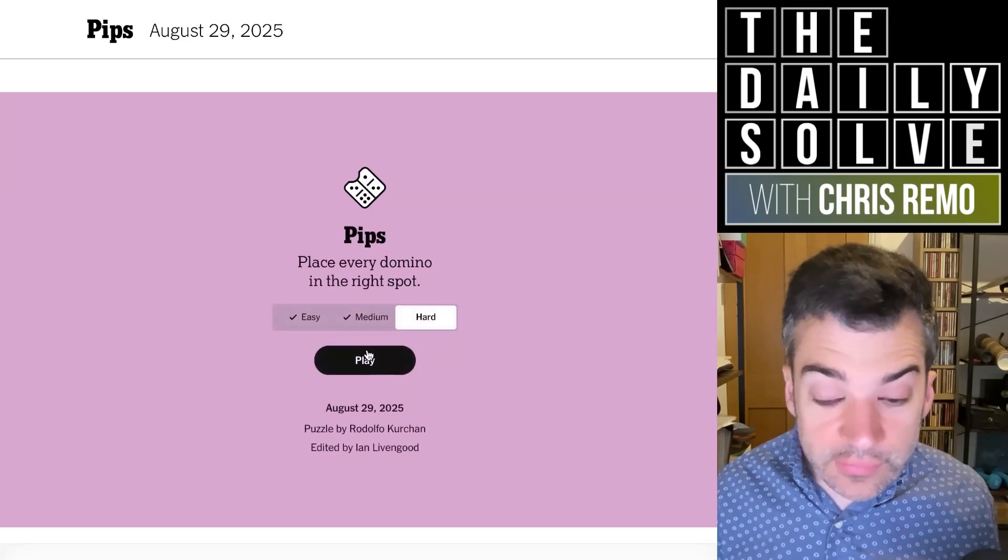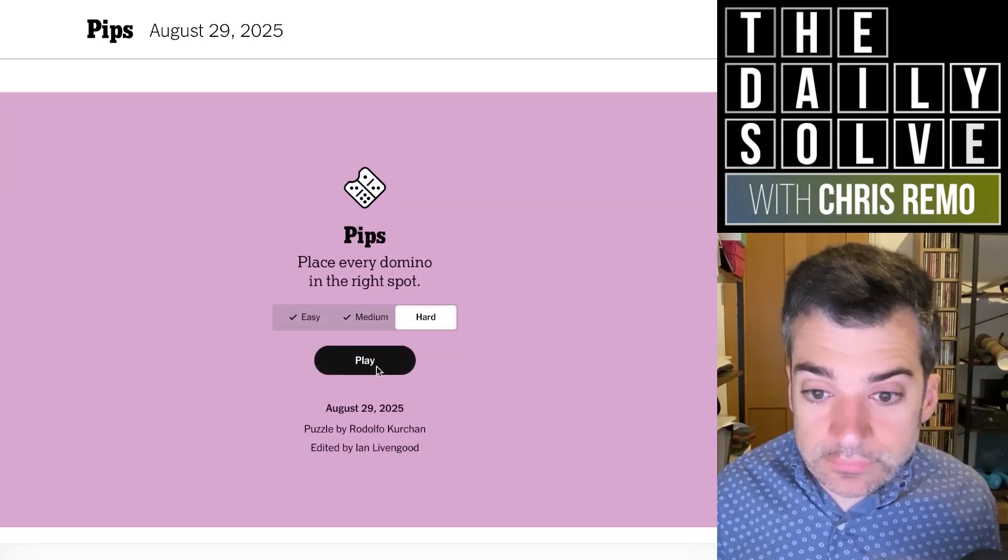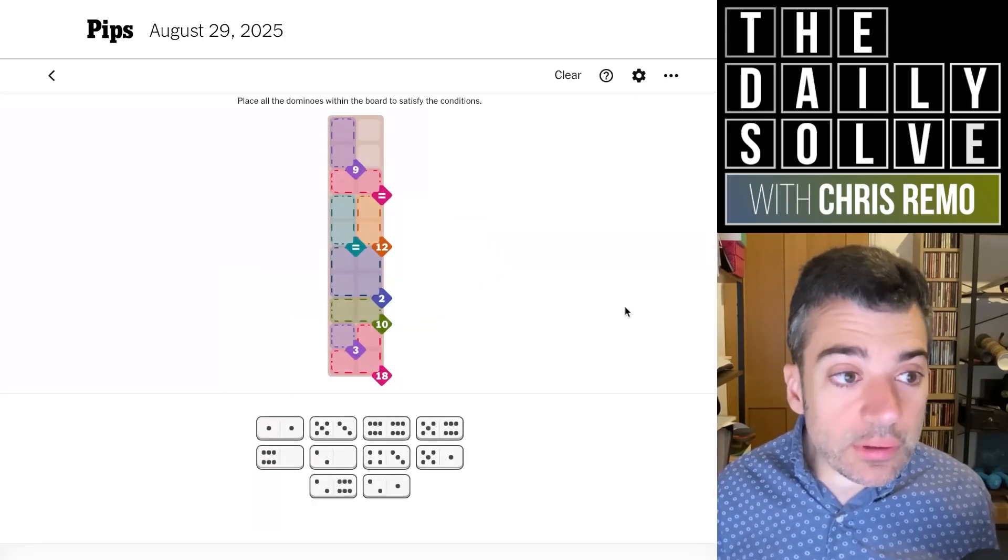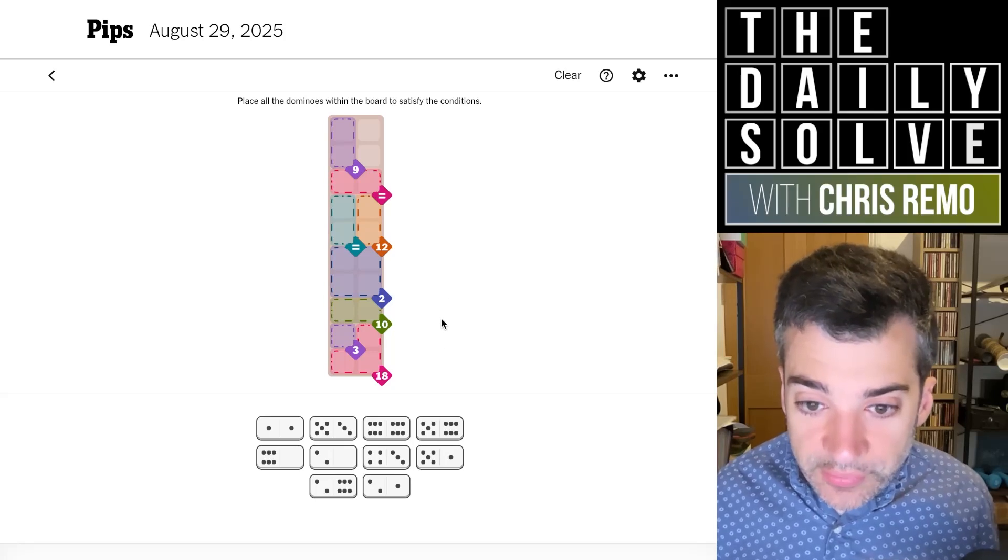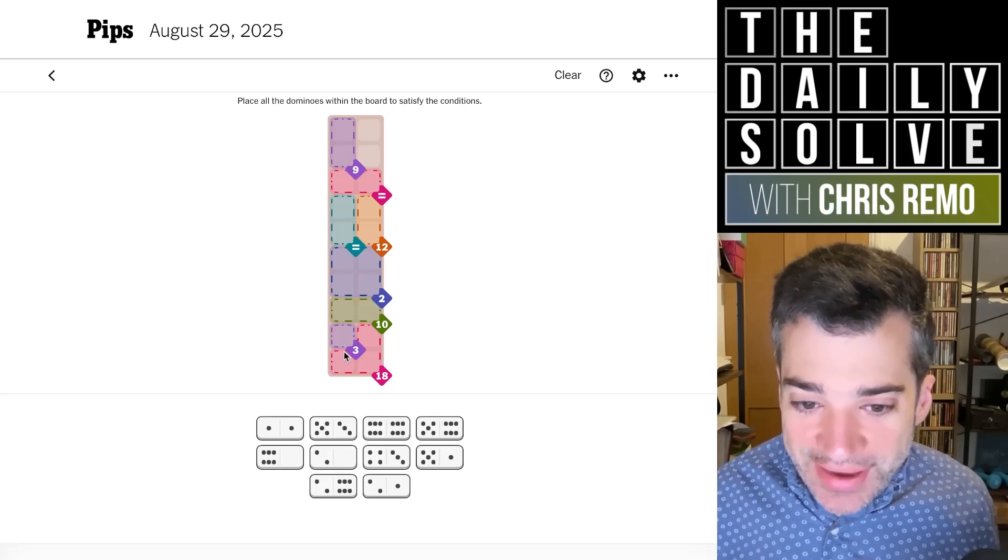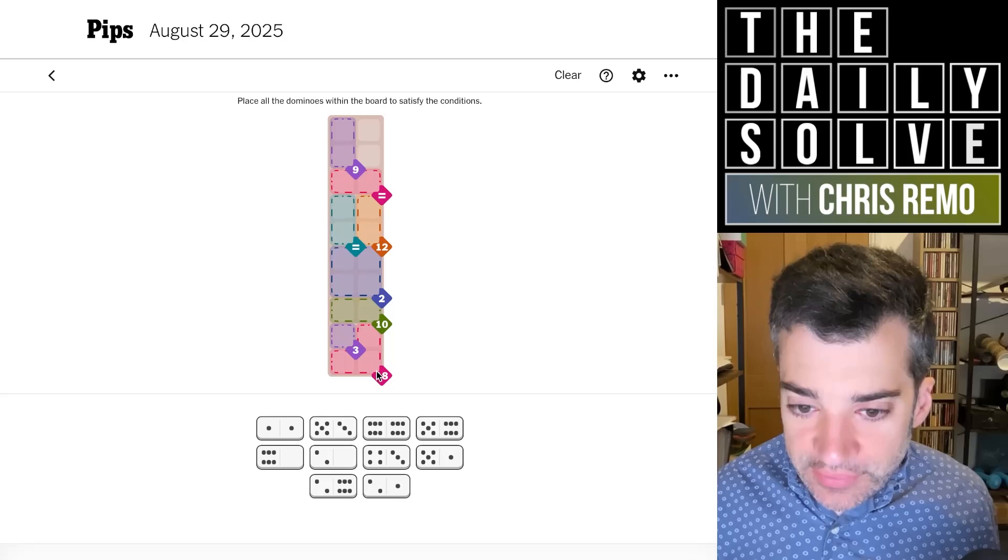Let's try hard. Whoa, look how small it is. That's really small. So we have 18 which must be made up of three sixes.